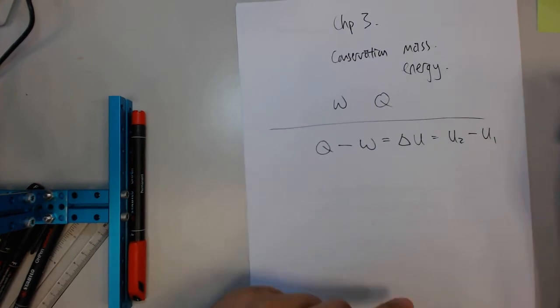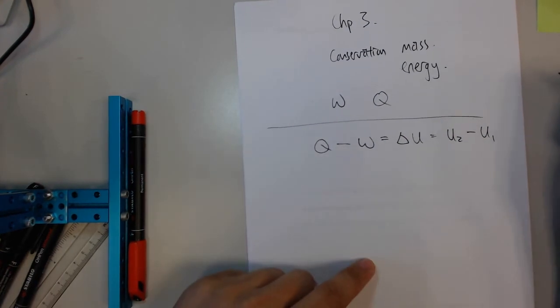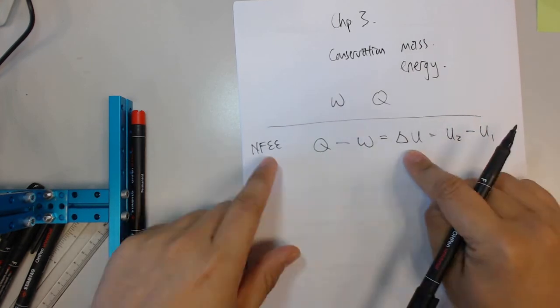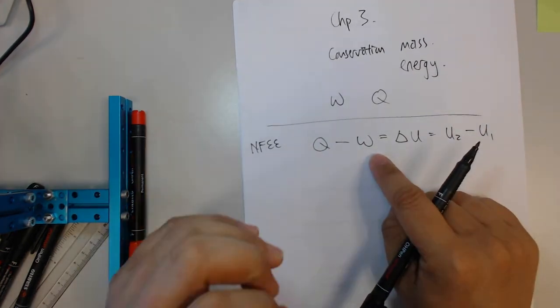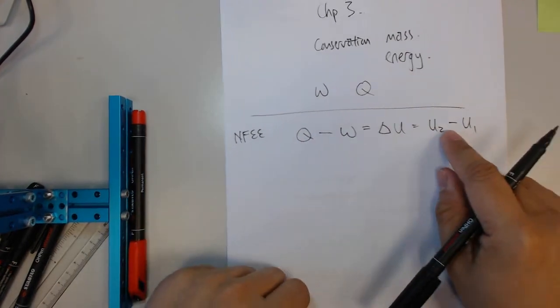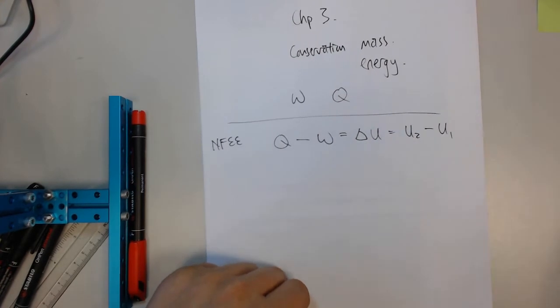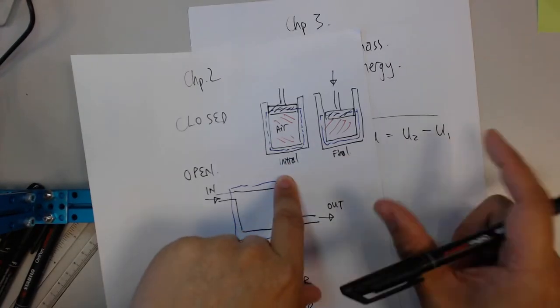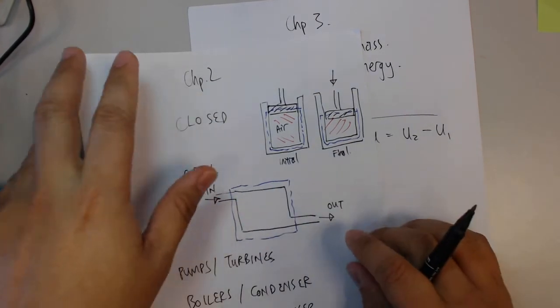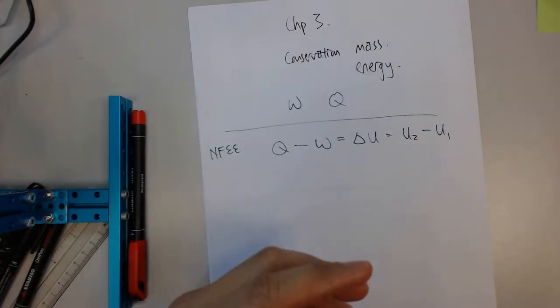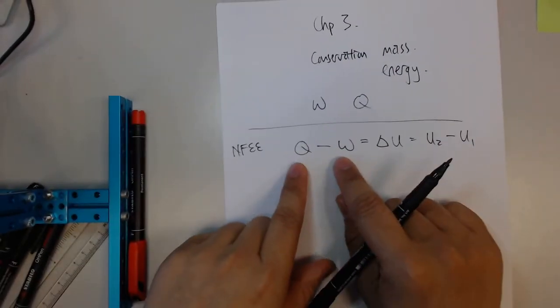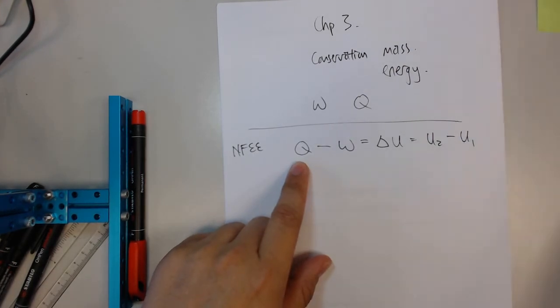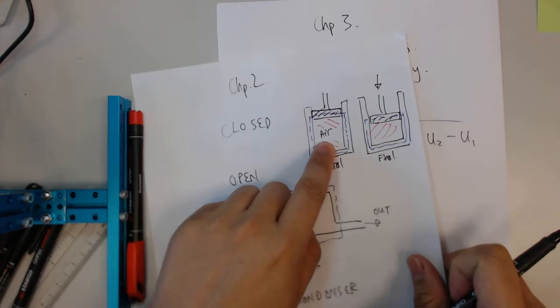So right off the bat, the first law, the first form of the first law is this: Heat transferred minus work equals change in internal energy, and this is U2 minus U1. We call this the non-flow energy equation, NFEE. And this is usually used mainly for closed systems.